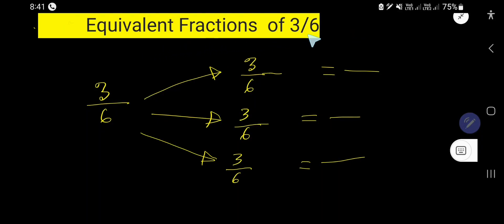Equivalent fractions of 3 over 6. Look, this is a fraction 3 over 6. We'd like to convert this fraction to its equivalent fraction. To find out the equivalent fraction of 3 over 6, we need to multiply both numerator and denominator by the same number except 0 and 1. We can also divide numerator and denominator by the same number to get the equivalent fraction.